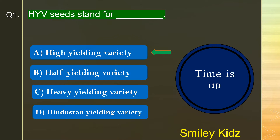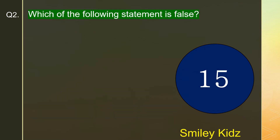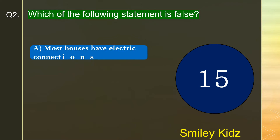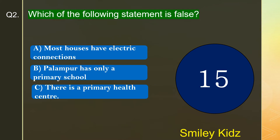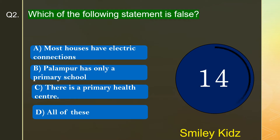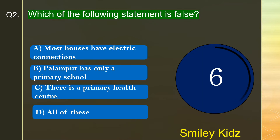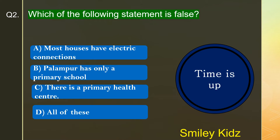HYV stands for High Yielding Variety. Question number 2. Which of the following statements is false? The options are A. Most houses have electric connections, B. Palampur has only a primary school, C. There is a primary health center, or D. All of these. Your turn is up and the right answer is option B. Palampur has only a primary school. This statement is false because Palampur has two primary schools and one high school. Therefore, the statement is false.